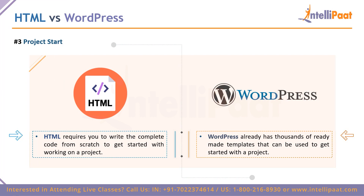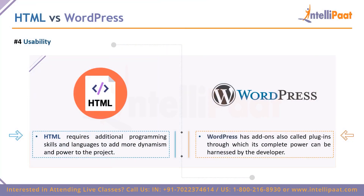The third point is starting a project. With HTML you have to completely code everything from scratch — every single line of code for your website must be written from the beginning. With WordPress, you have thousands of ready-made templates available. You can pick one that fits your project and then focus on your content, giving more time to content rather than spending time beautifying the website.